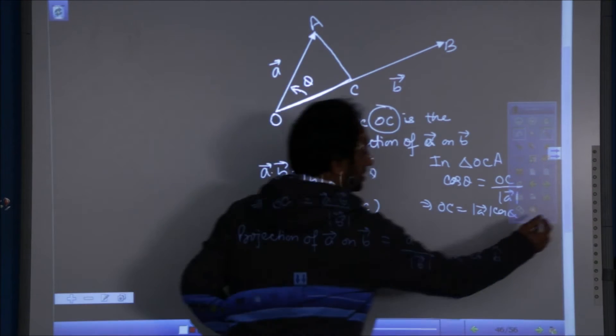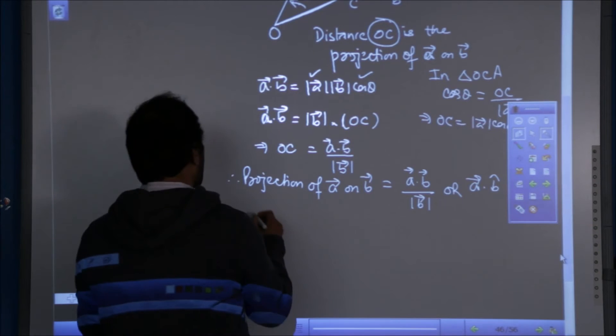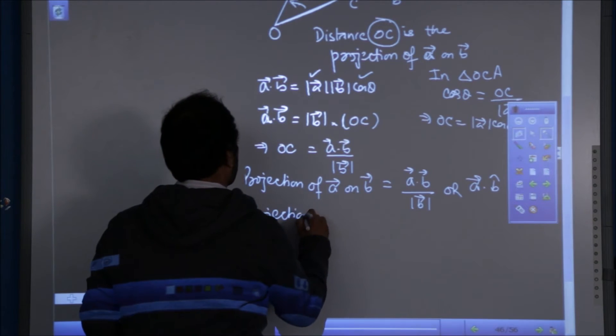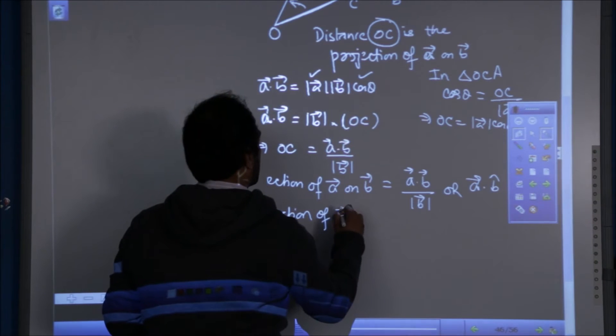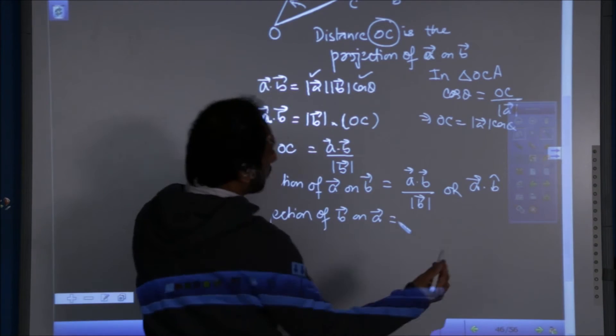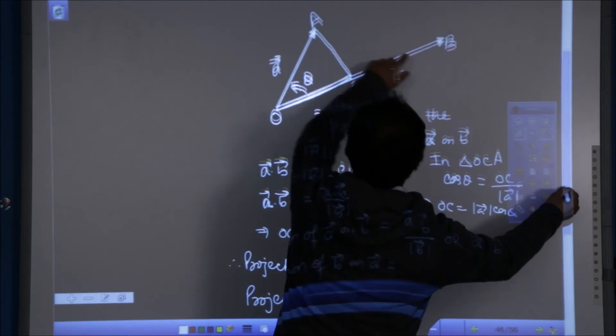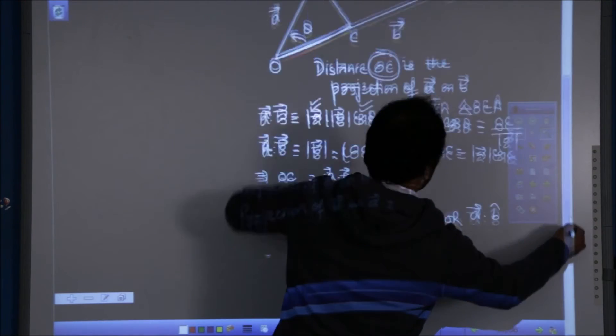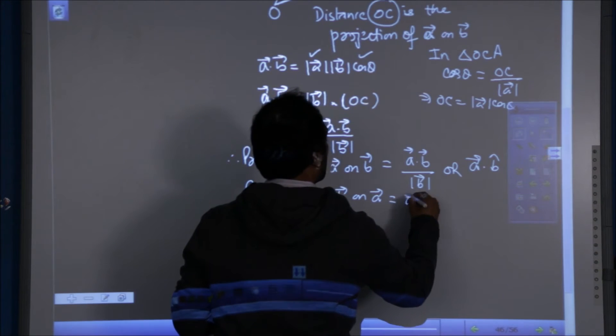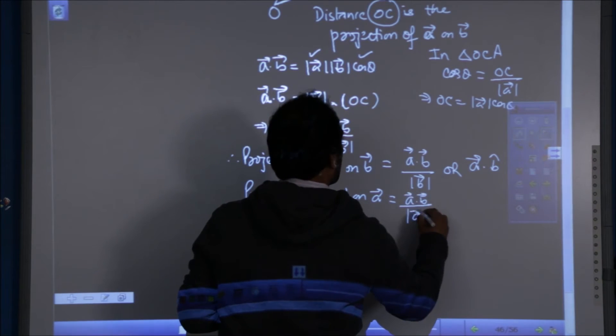Similarly, if one wants a projection of B on A, we have to draw a perpendicular from B on A. Then the expression will be A dot B over mod A.